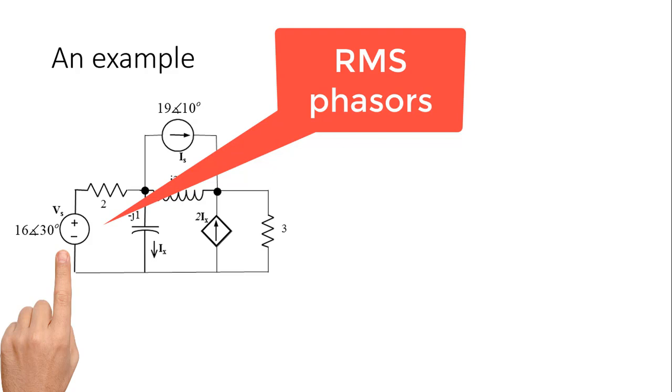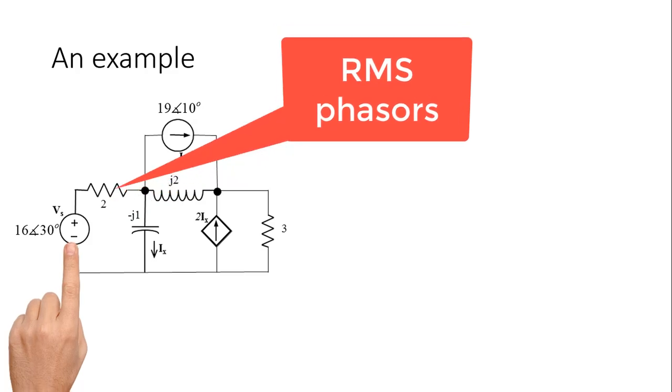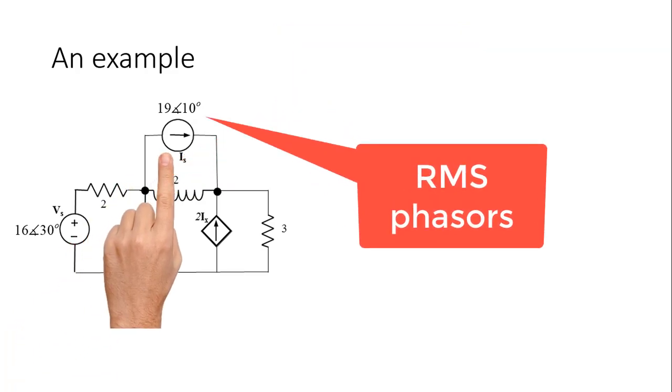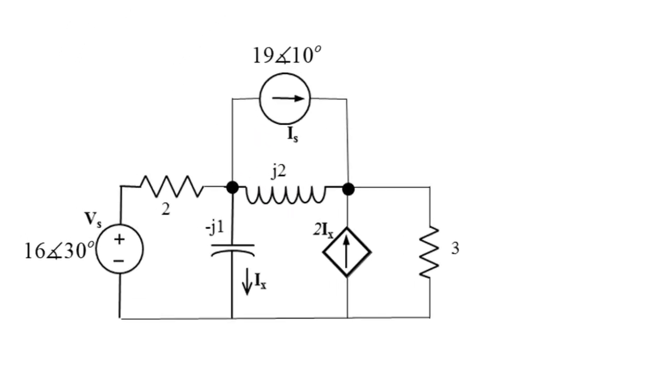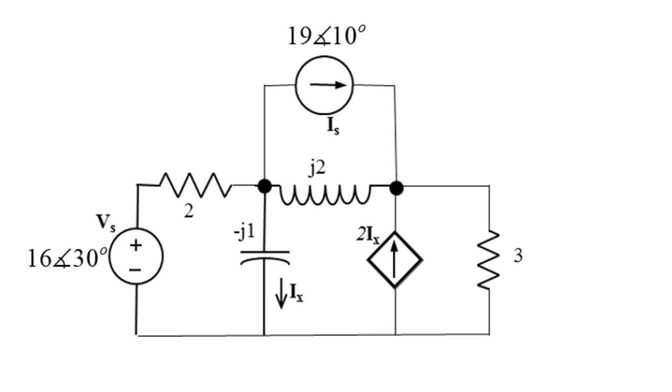Two independent sources, a voltage source 16 volts with 30 degrees on the left and a current source 19 amps with 10 degrees on the top center, energize the circuit that has one inductor, one capacitor, two resistors and one dependent current source.